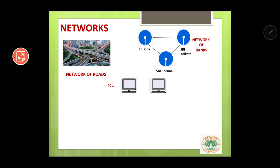This is the third PC — PC3. Let us say you have three rooms in your house and in each room you have bought a PC and are using them individually. If you are using them individually, then you cannot say that a network has been formed.